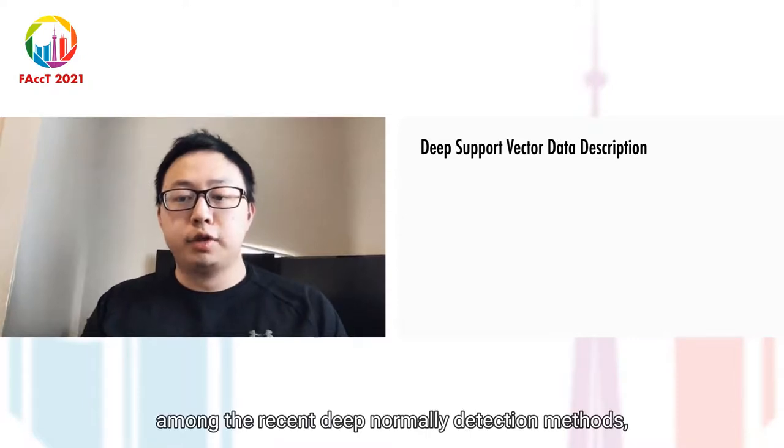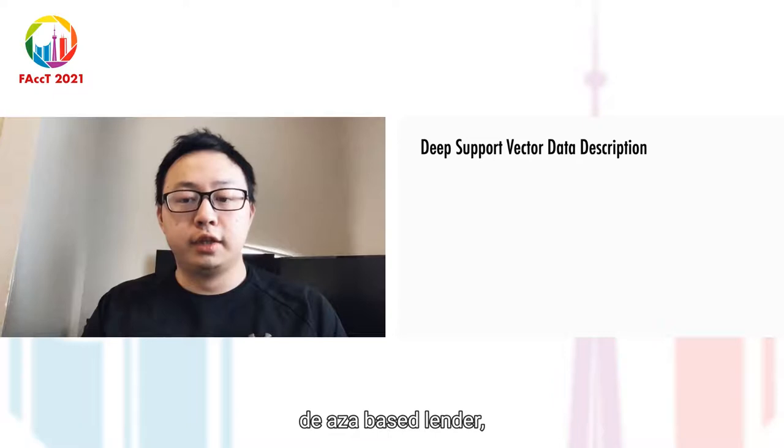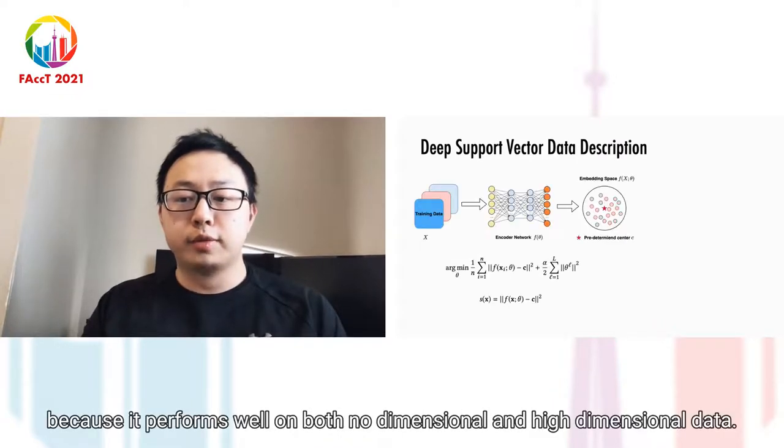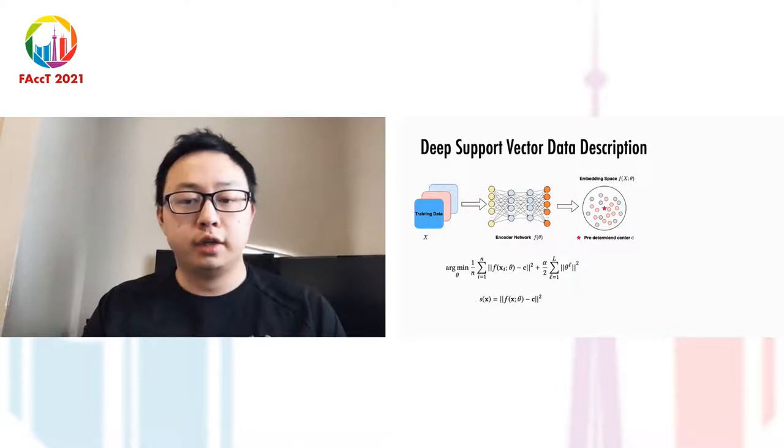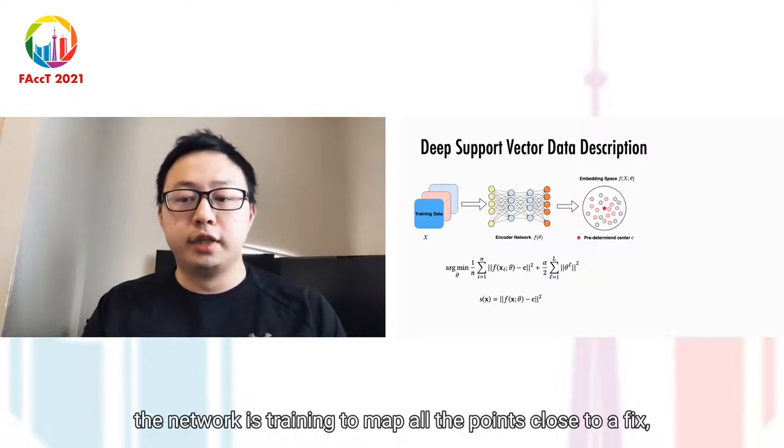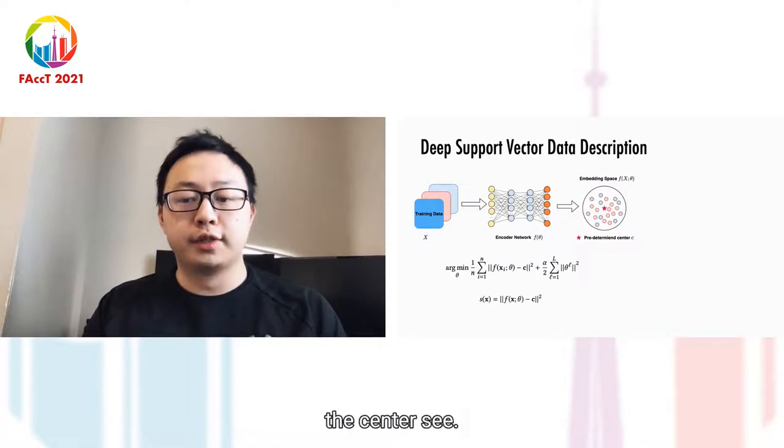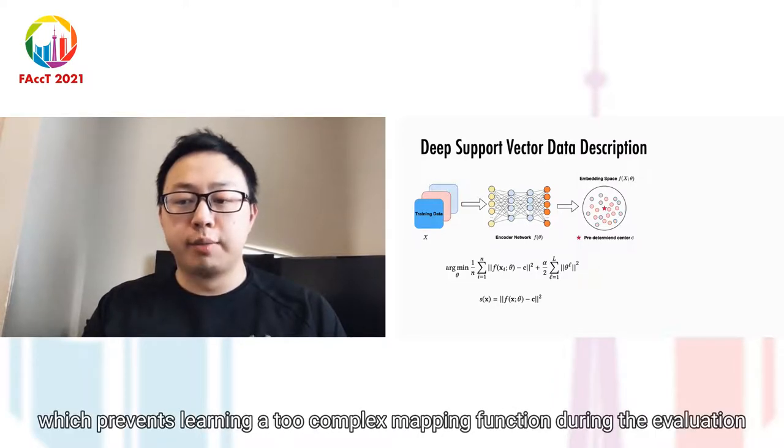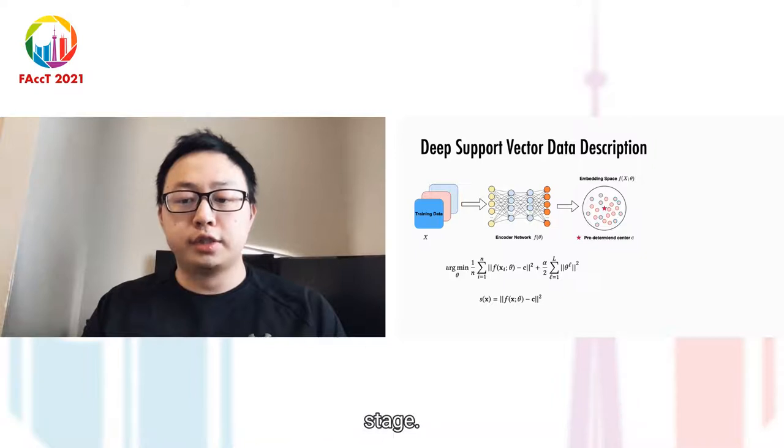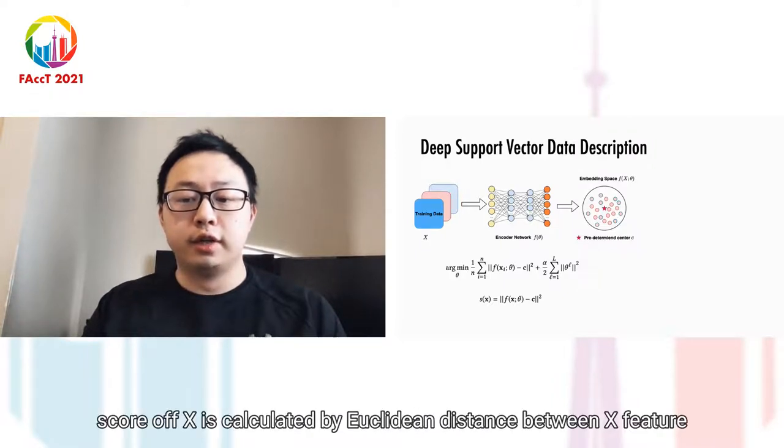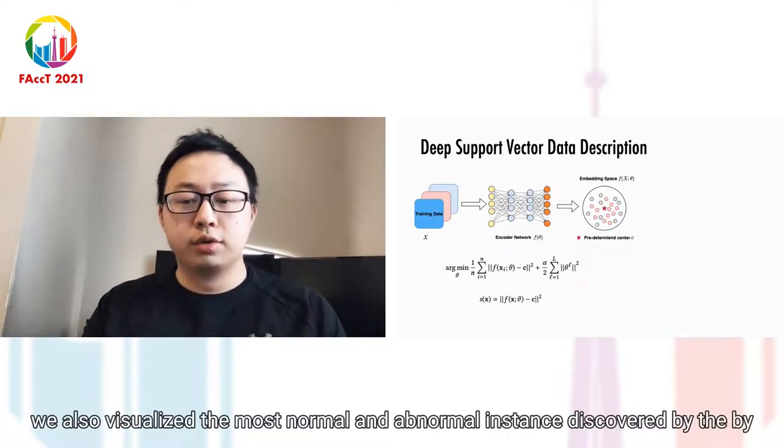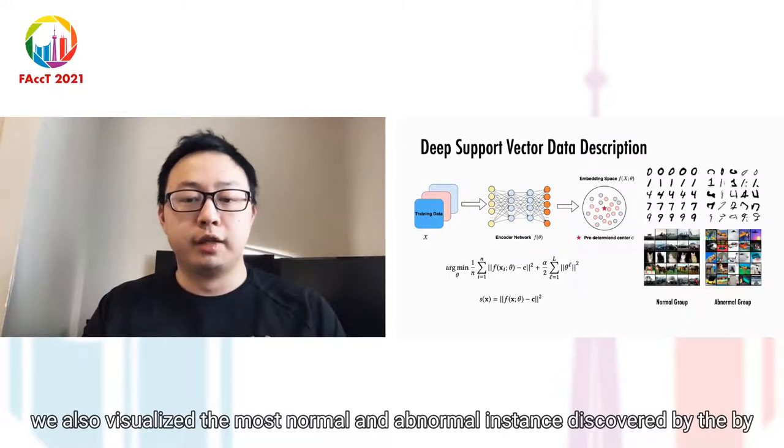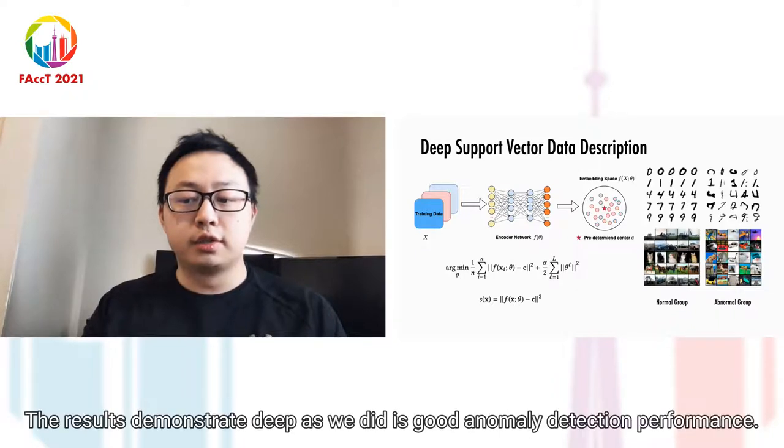Among the recent deep anomaly detection methods, we focus on deep SVDD as a base learner because it performs well on both low-dimensional and high-dimensional data. Given the training data, the deep SVDD network is trained to map all the points close to a fixed center C. During evaluation, the anomaly score of X is calculated by Euclidean distance between X's feature space embedding and the center C. We also visualize the most normal and abnormal instances discovered by deep SVDD, demonstrating its good anomaly detection performance.